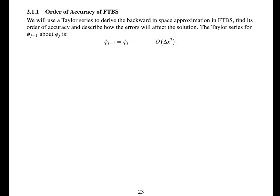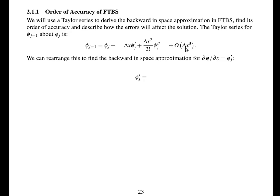To calculate the order of accuracy of forward in time, backward in space, we use Taylor series to derive a backward-in-space approximation. We only calculate the order of accuracy of the gradient in space, because the gradient in time is the same — it's just forward rather than backward, so it'll have the same order of accuracy. We start by writing down the Taylor series for phi_{j-1} about phi_j: phi_{j-1} equals phi_j minus delta_x * phi_j' plus delta_x^2 over 2! times phi_j'' plus terms of order delta_x^3.